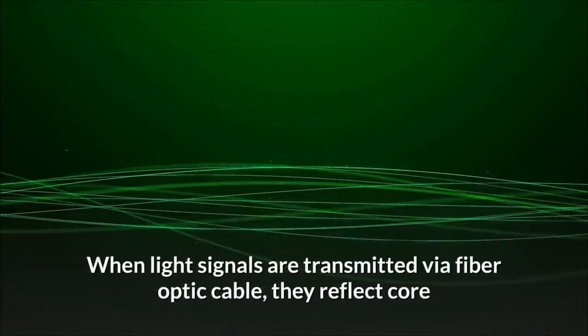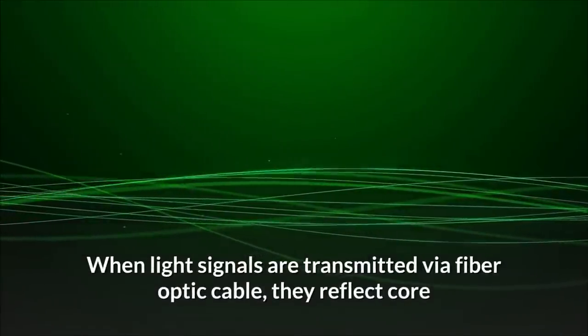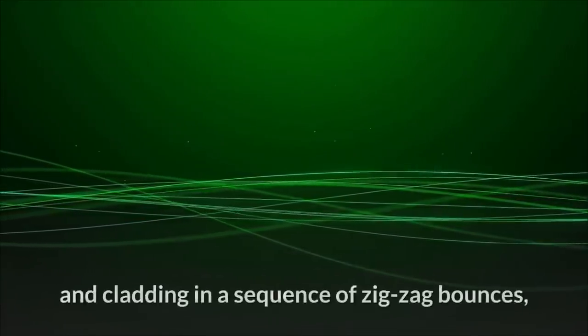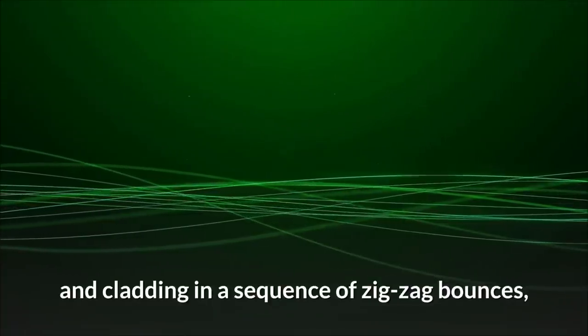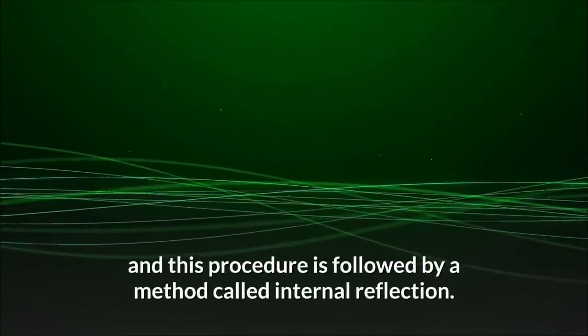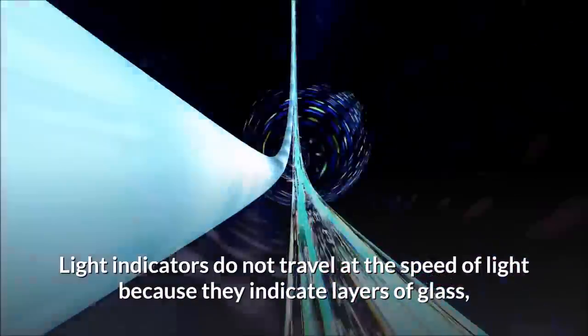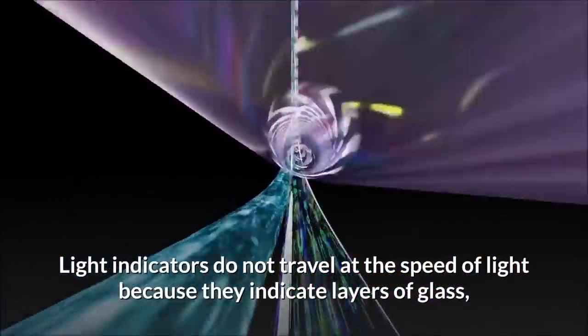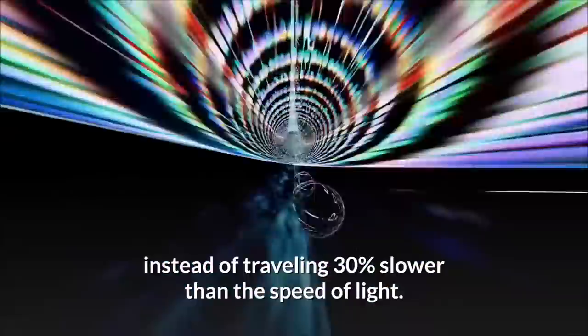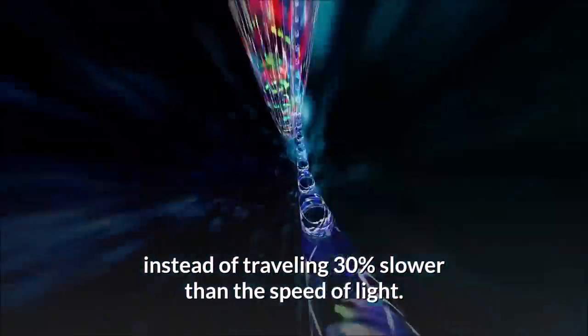When light signals are transmitted by a fiber optic cable, they reflect core and cladding in a sequence of zig-zag bounces, and this procedure is followed by a method called internal reflection. Light indicators do not travel at the speed of light because they indicate layers of glass, instead of traveling 30% slower than the speed of light.